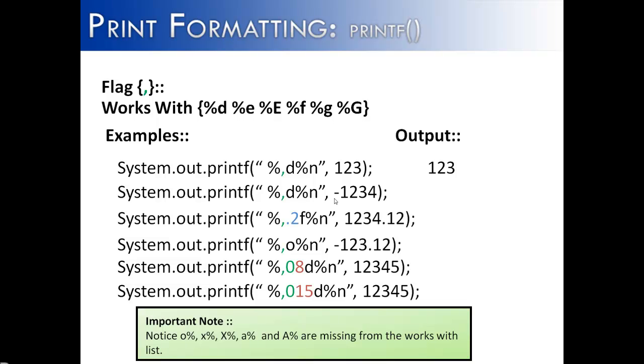On the other hand, in the next example with negative 1234, we do have enough spaces to include the group separator comma. So we see after the three digits, we have a comma and then the 1.